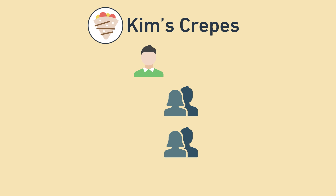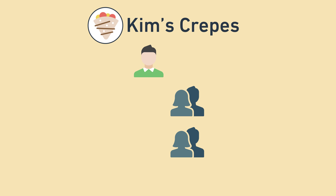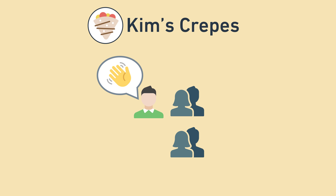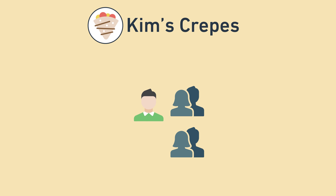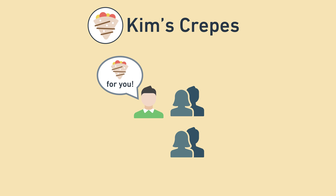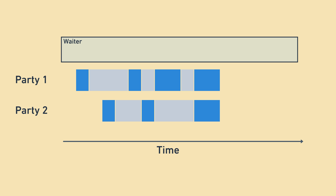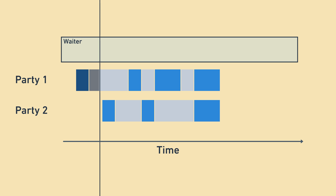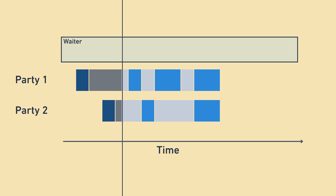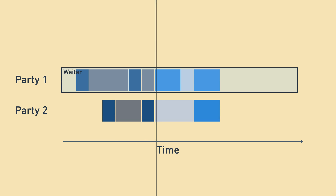Let's imagine now that two parties enter the restaurant at about the same time. You might think that one waiter can only serve one party at a time, but that's actually not the case. While a party is looking at the menu, or eating, or waiting for their food, they generally don't need help, so the waiter can ping-pong between tables and help both at the same time. I've broken up each table into parts when they need help in dark blue, and parts when they don't need help in light blue.